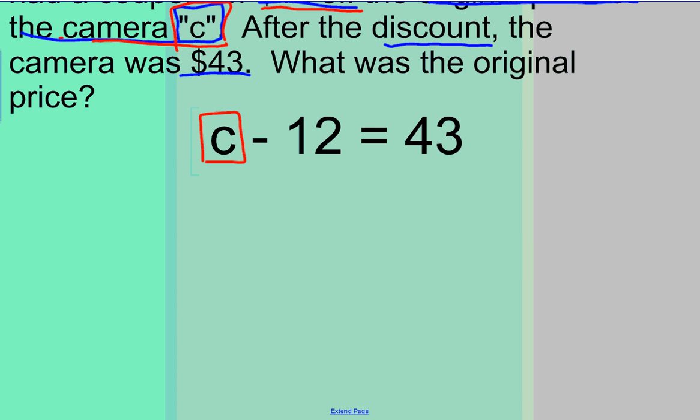So the first thing I do is look at whatever is attached to or on the same side of the equal sign as my variable. And here I can see minus $12. I need to get rid of that or undo it so I can get C all by itself again.